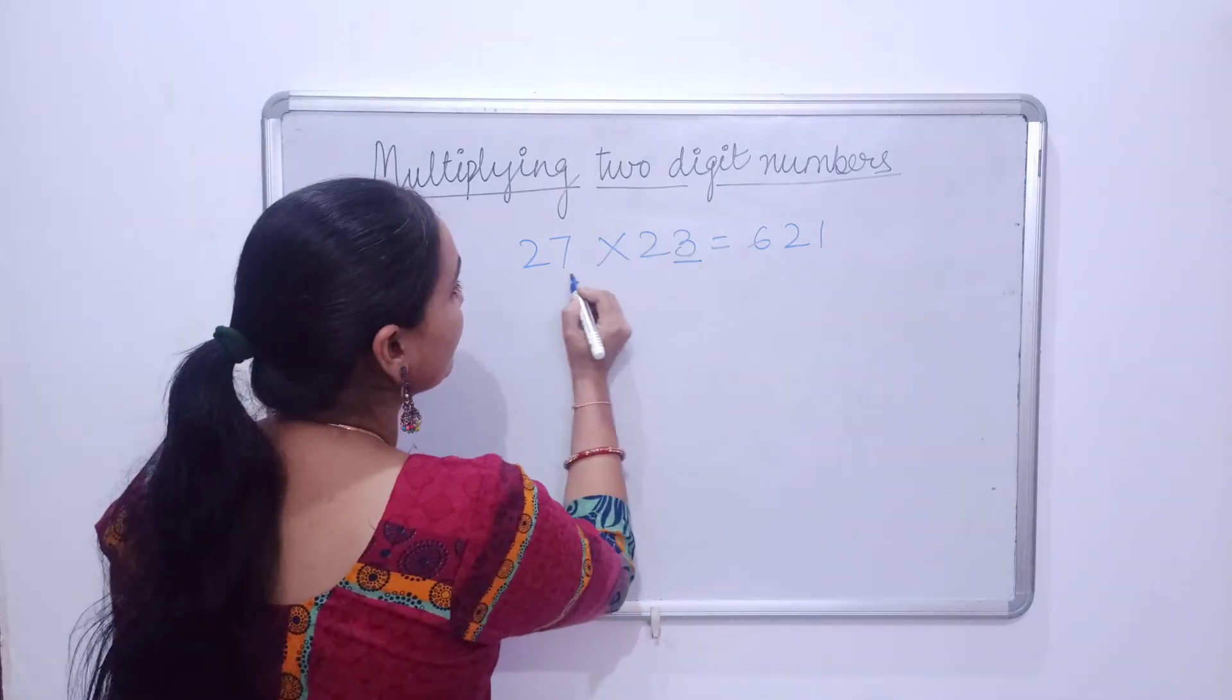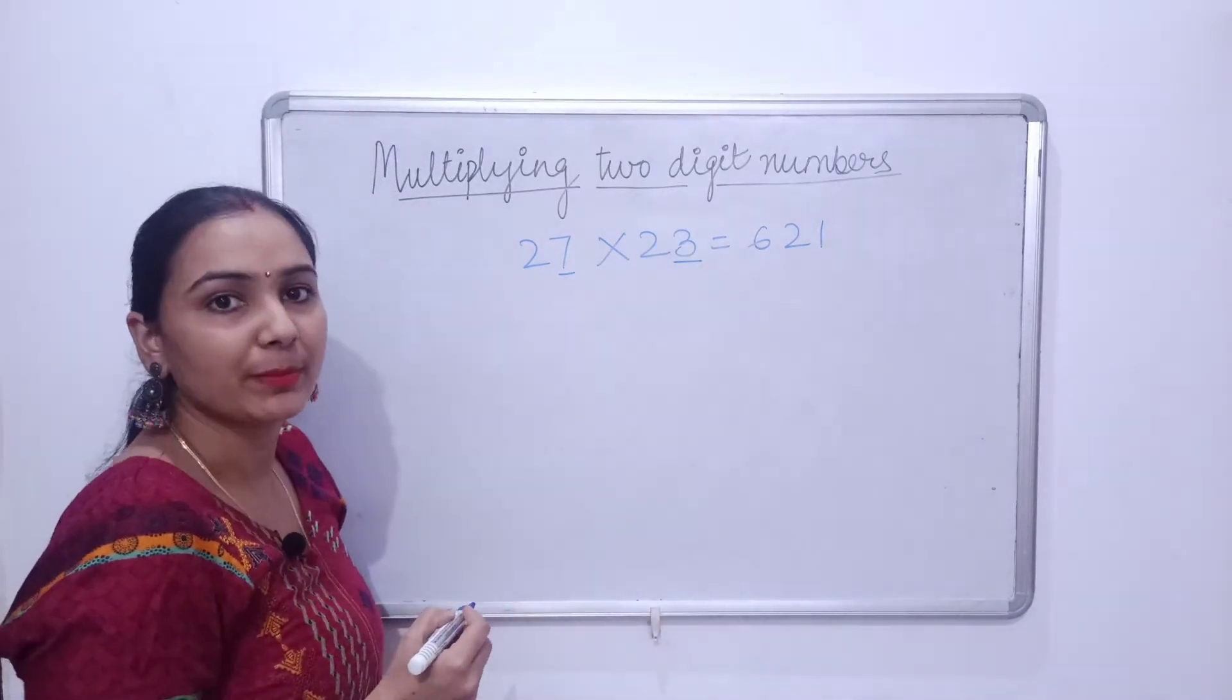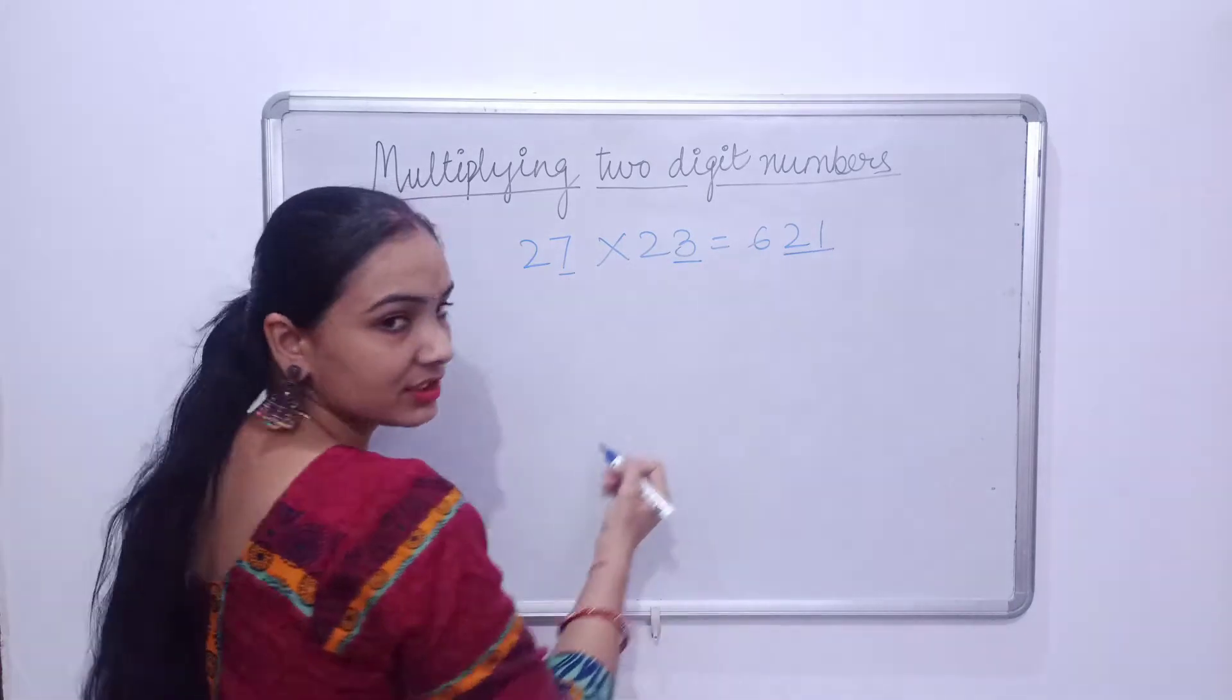First of all, what do you have to do? You have to multiply the ones-place digits. So, 7 times 3 is 21.